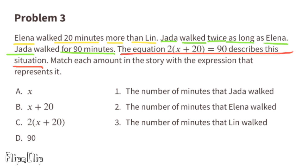Problem number three: Elena walked 20 minutes more than Lin. Jada walked twice as long as Elena. Jada walked for 90 minutes. The equation 2 times x plus 20 equals 90 describes this situation. Match each amount in the story with the expression that represents it. Elena walked 20 minutes more than Lin, so we write e equals l plus 20. Jada walked twice as long as Elena, so j equals 2e.